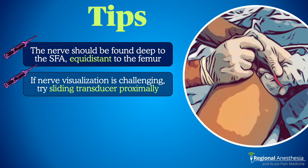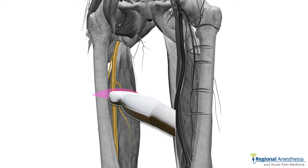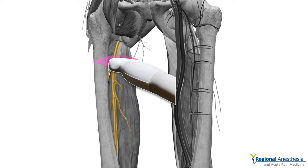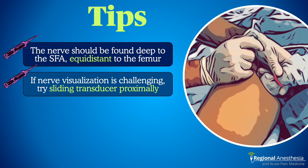Second, it's common to put the probe on the thigh and not see the nerve right away. There's a good chance the probe is a little too distal. If you find yourself at mid-thigh, slide up towards the groin to get a better view. This block is best done at the proximal third of the femur.